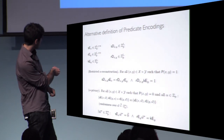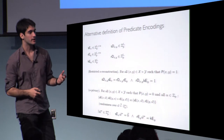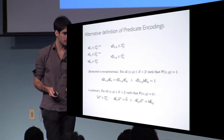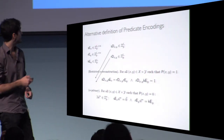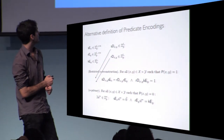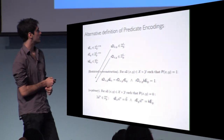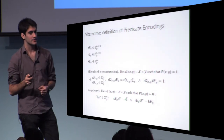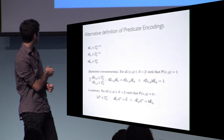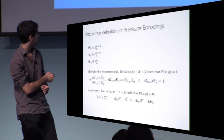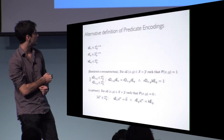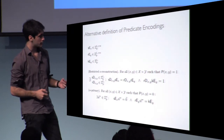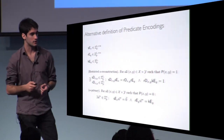We call the solution W* the witness for the fact that the two distributions are identical. Another modification is to absorb the two decryption algorithms into the definition. Since decryption only happens when the predicate is true, and when the relevant linear system has a solution you can compute these algorithms efficiently via Gaussian elimination, there is no need to consider them explicitly.